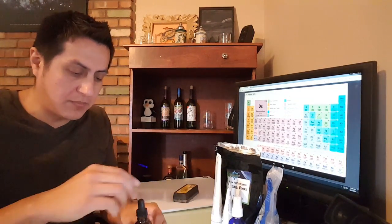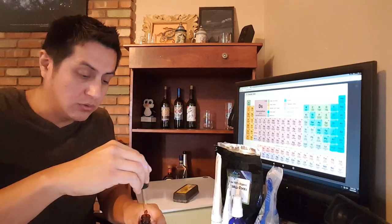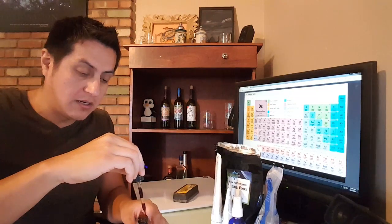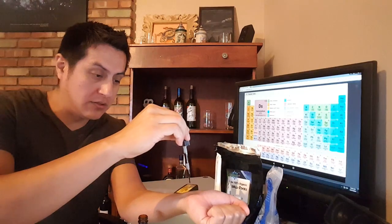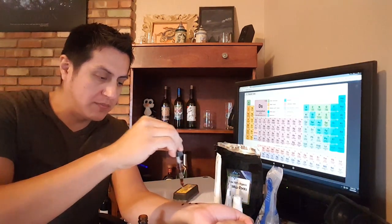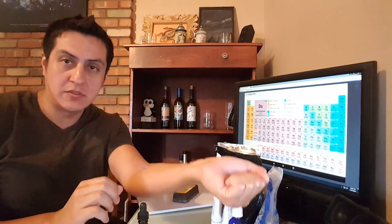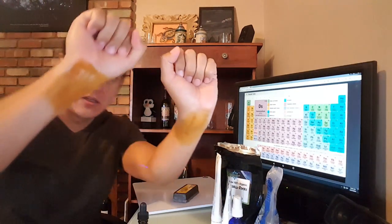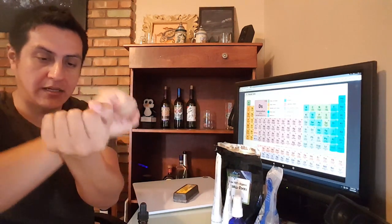This is basically a bottle of Lugol's solution iodine. All I do is I take this Lugol solution and I use it transdermal. So basically, I do about just three drops right here on my wrist, just like that, and I just basically rub that in.